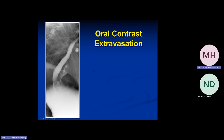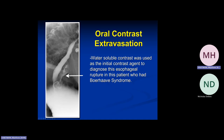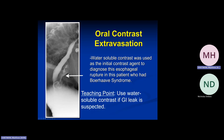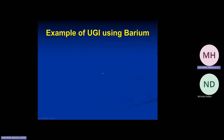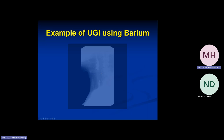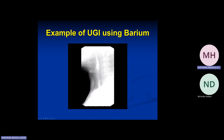Here's an example of a patient with suspected Boerhaave's syndrome. They drink the oral water-soluble contrast which goes down, but then we get this outpouching — a leak right near the GE junction. We used water-soluble contrast first. Here's an example using barium from a modified swallow study: barium is going down nice and radiopaque down the esophagus and not the trachea.